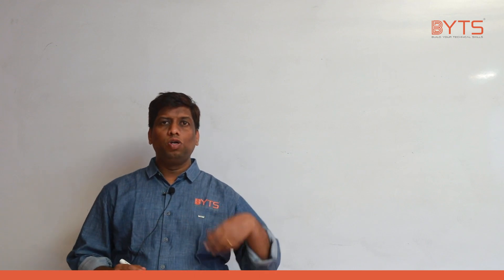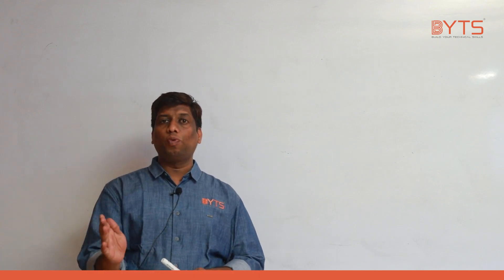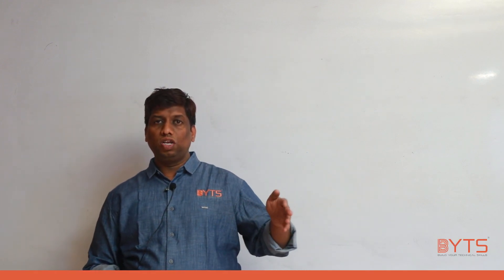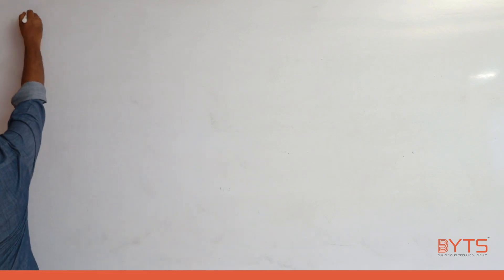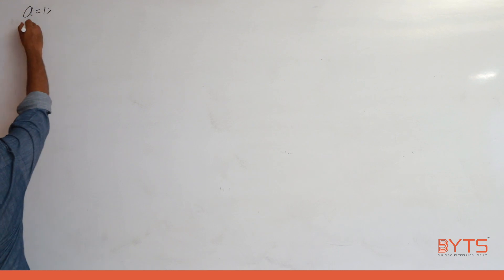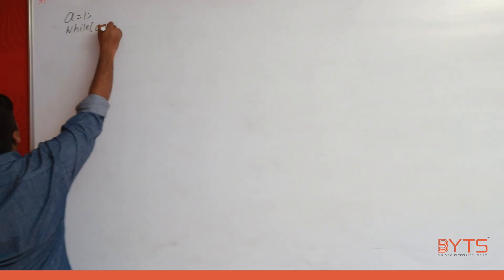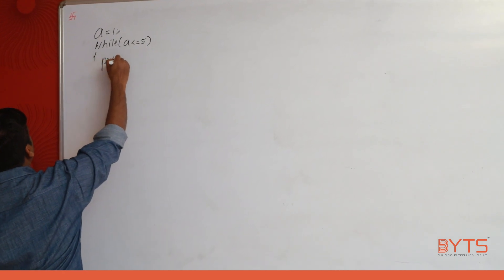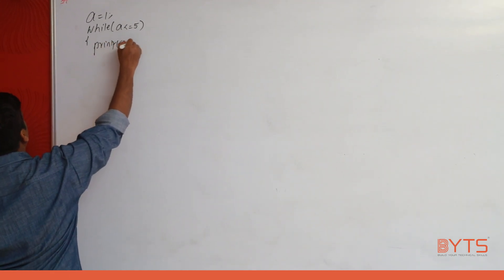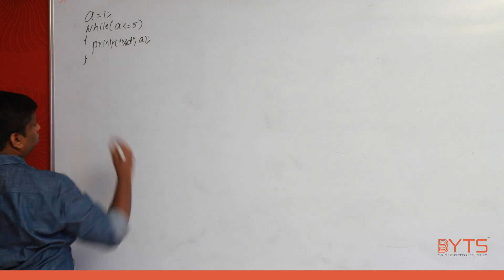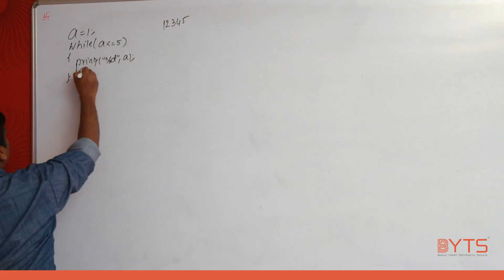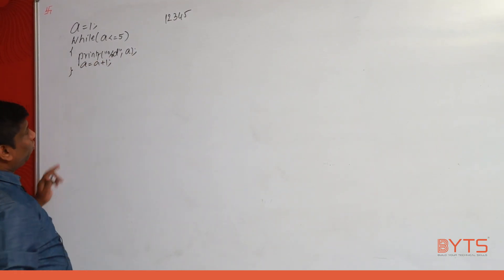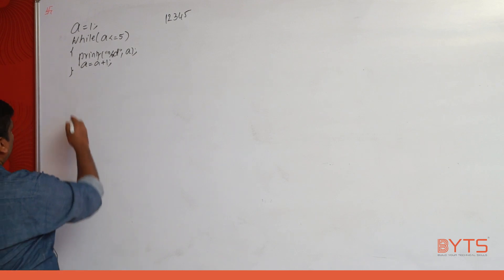My requirement is to print 1, 2, 3, 4, 5. To do that, I write: a = 1, while a <= 5, printf("%d", a), a = a + 1. This will print 1, 2, 3, 4, 5. The statement a = a + 1 is very important — without it, the loop becomes infinite.